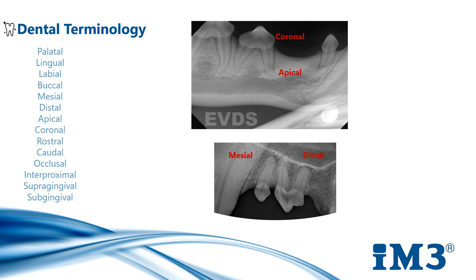When we describe rostral, we're talking about towards the tip of the nose, and caudal is towards the tail. Occlusal is the surface closest to the corresponding teeth on the opposite dental arch. Interproximal is the surface between adjacent teeth. Supragingival is coronal — so above the gingival margin.